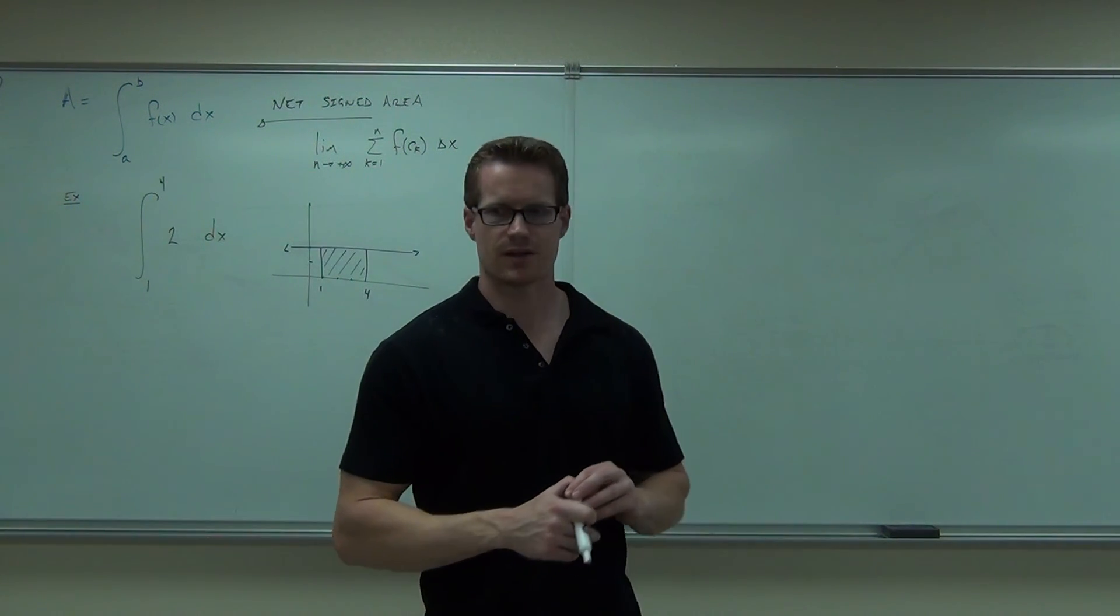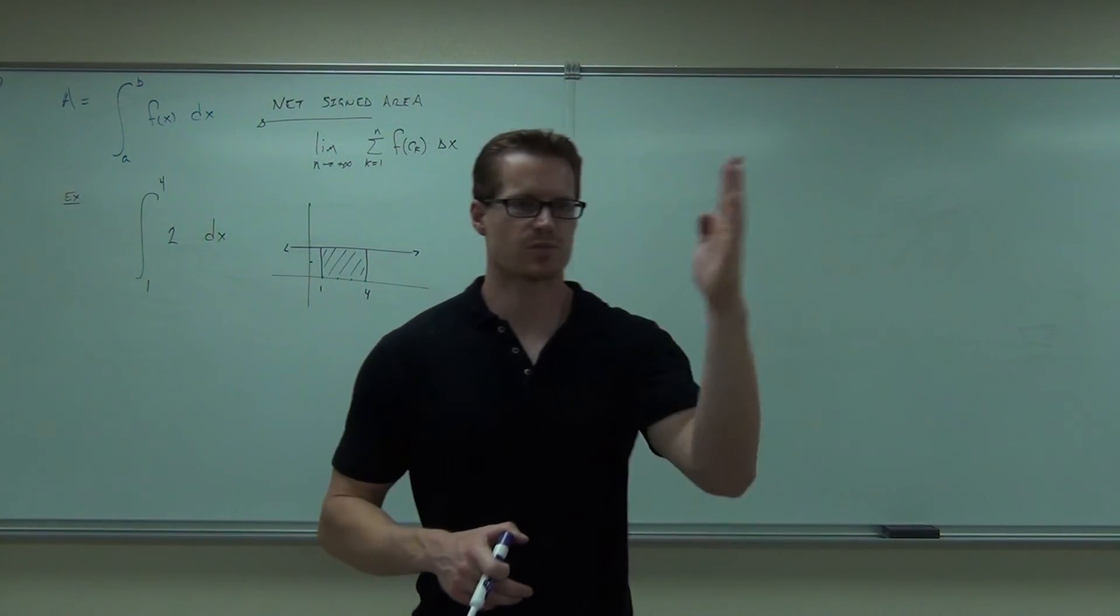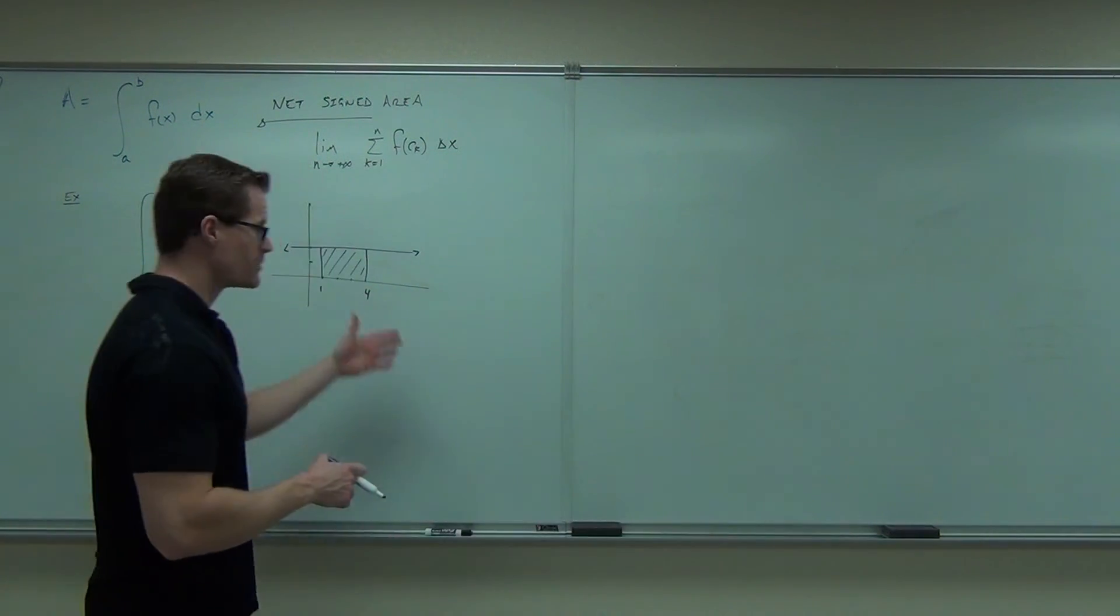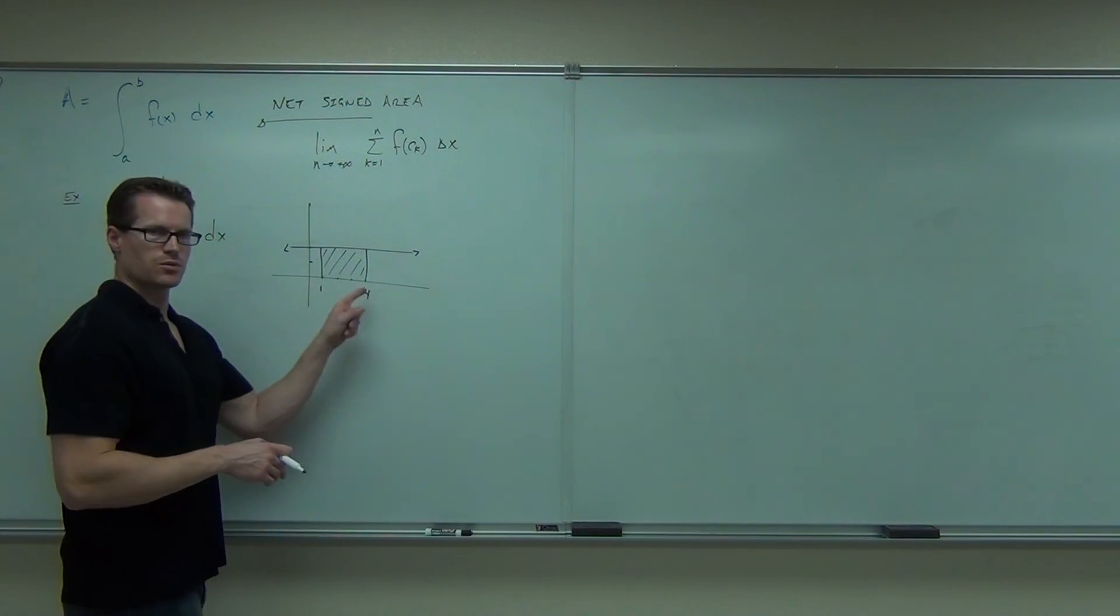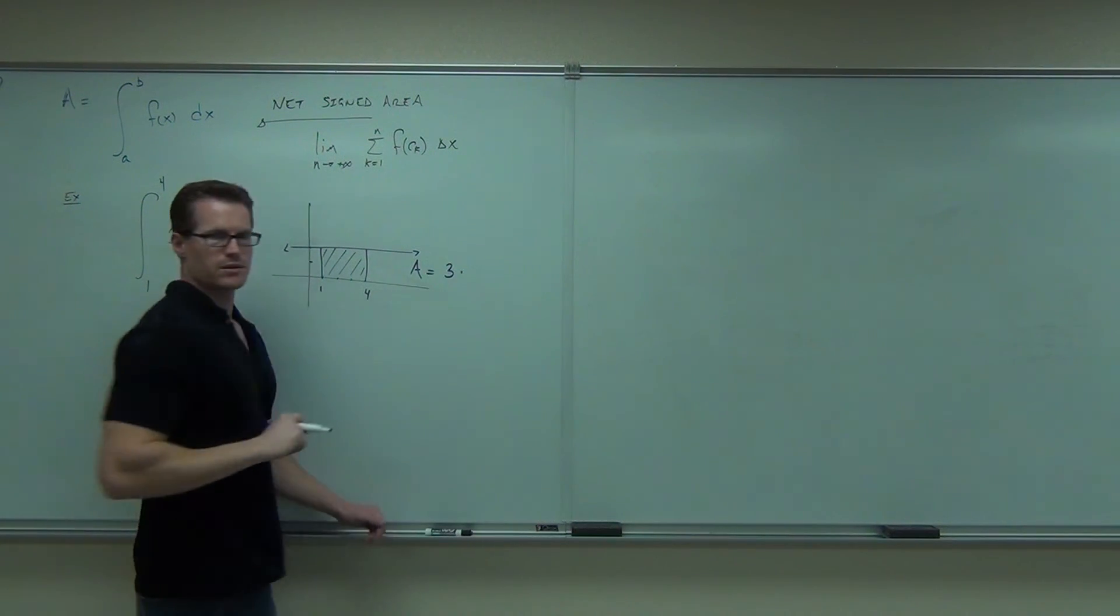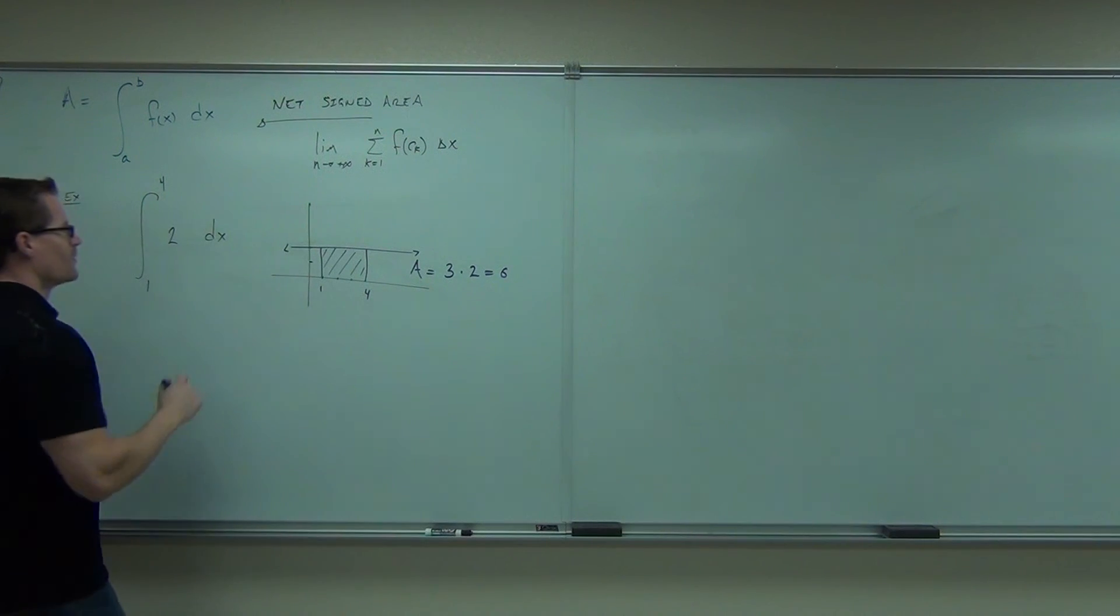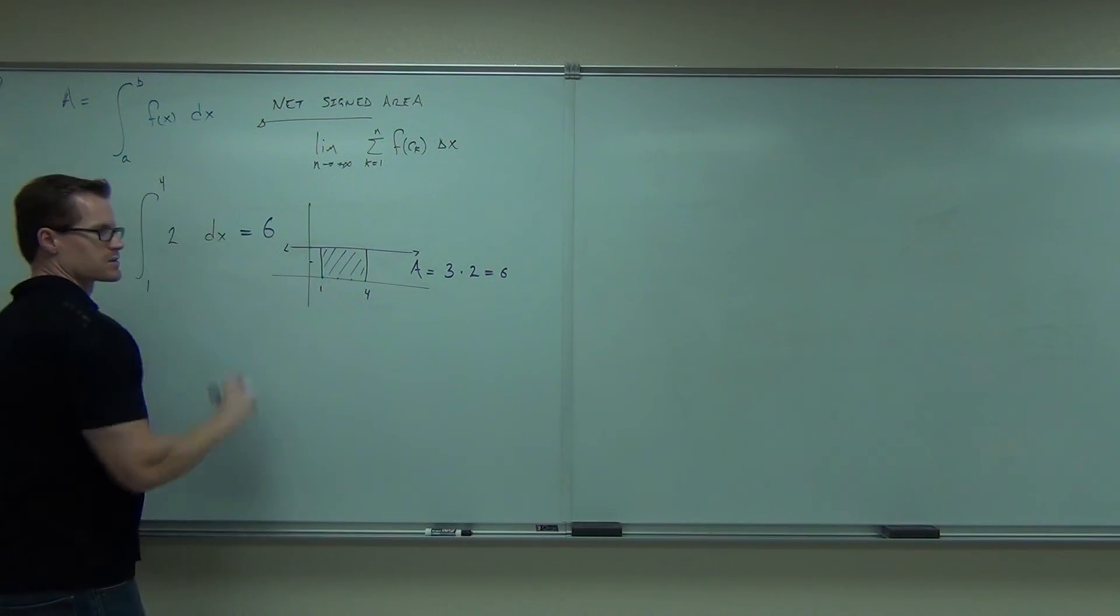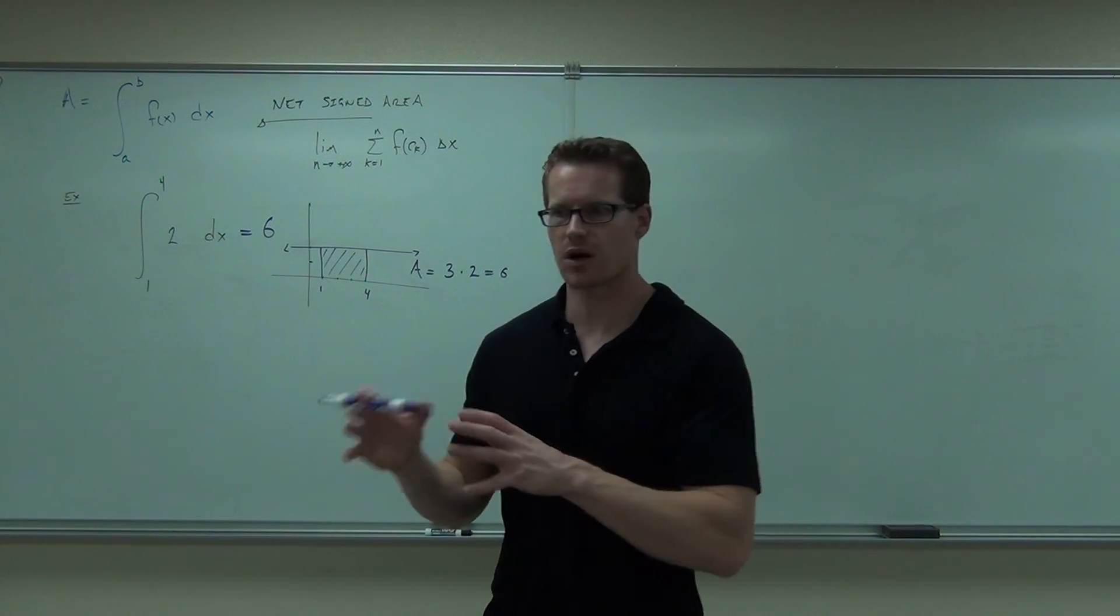Now, for constants, that's pretty easy, right? It just says, oh, we have this horizontal line. We're going from one spot to another. Let's actually calculate the area geometrically. What's our base? Three. Good. One to four gives you a three. What's our height? Two. So what's the area? Six.